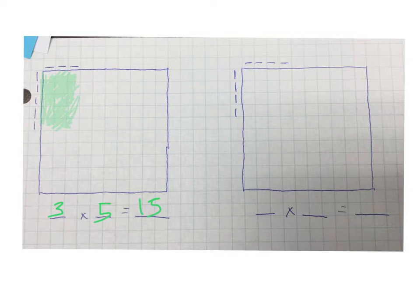All right. So now let's look at the next array. We'll use a different color here. Looks like we have a four by four. So we're going to shade in a four by four array here. And then we're going to write a multiplication equation that matches. Four times four equals sixteen.